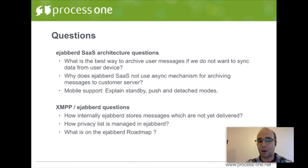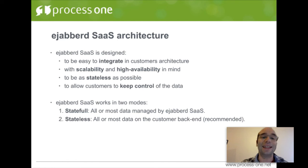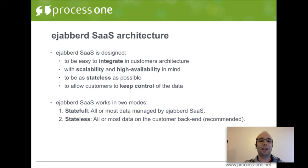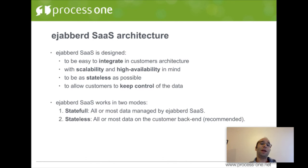Before addressing the questions, let me explain how EJABBERD SaaS architecture works in relation to your own backend as a customer. EJABBERD SaaS is designed to be easy to integrate into your own architecture. You can manipulate EJABBERD SaaS data through API, but more interestingly, you can plug EJABBERD to your own backend via an HTTP endpoint. It's designed with scalability and high availability in mind, and is designed to be as stateless as possible.